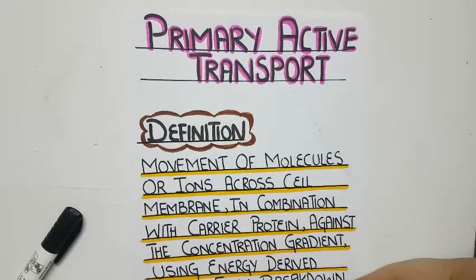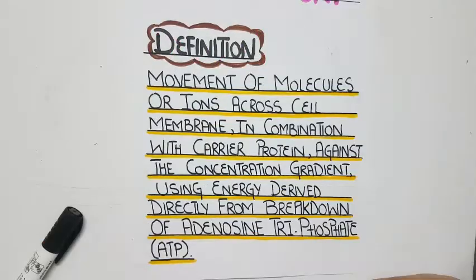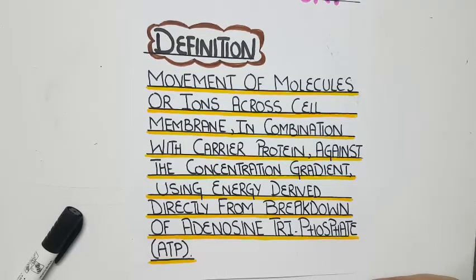Primary active transport is defined as the movement of molecules and ions across the cell membrane in combination with a carrier protein, against the concentration gradient, using energy derived directly from the breakdown of adenosine triphosphate, or ATP.